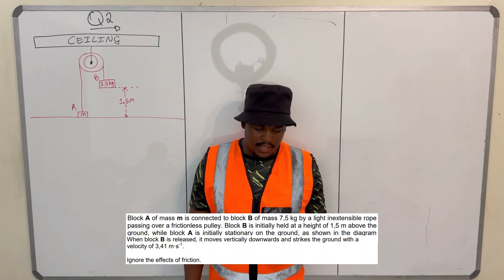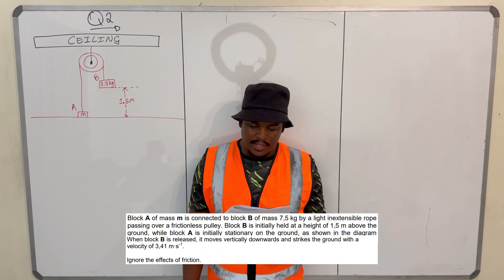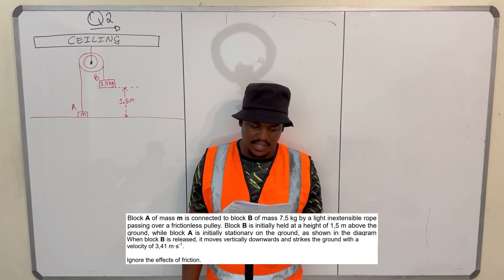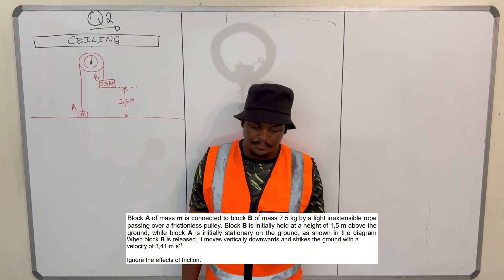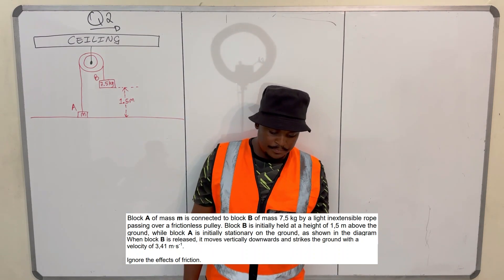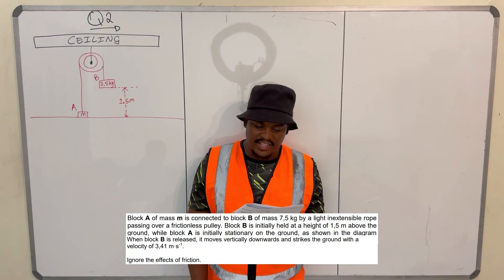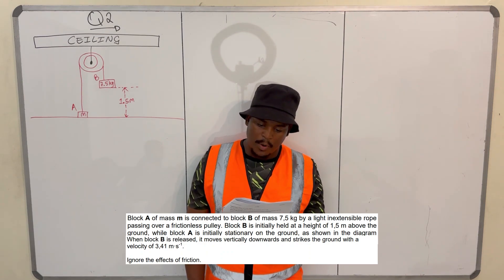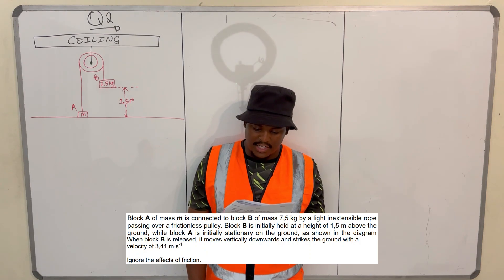Block A of mass M is connected to block B of mass 7.5 kg by a light inextensible string passing over a frictionless pulley. Block B is initially held at a height of 1.5 meters above the ground, while block A is initially stationary on the ground, as shown in the diagram below.